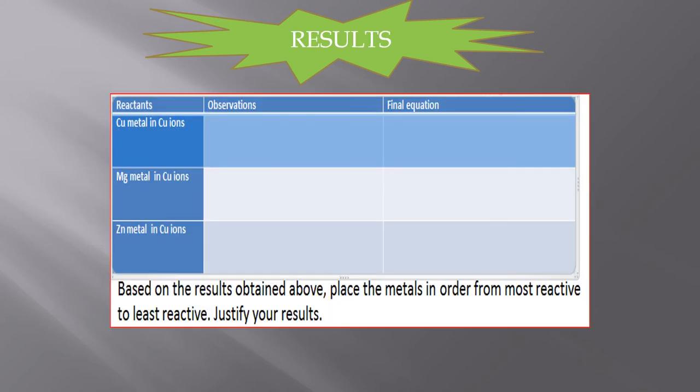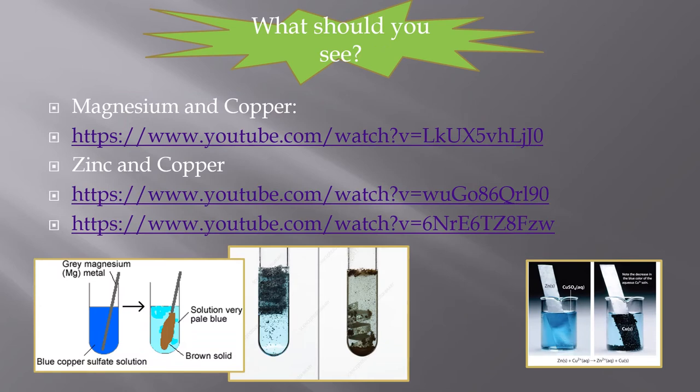Here's the results table that you should have, and you write your observations in there. Now, if we think about it, it all comes back to the reactivity series. Copper metal and copper ions, they are the same level on the reactivity series, so they're not really going to react. So really, in that particular one, it should be nothing. Nothing happened. No equation. But the magnesium and zinc will be a little bit different. I'll come back to that in a minute.